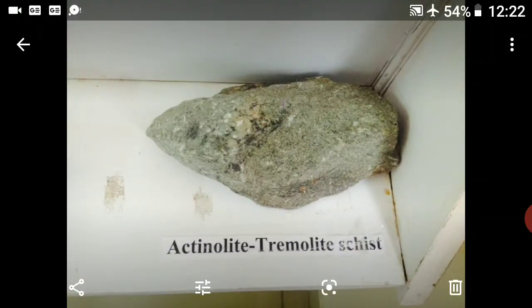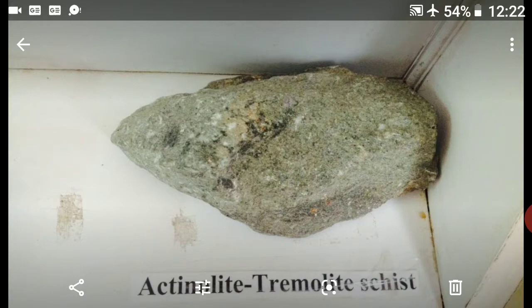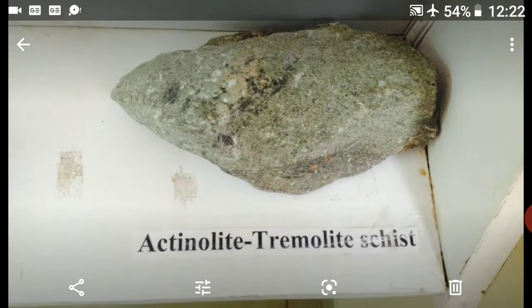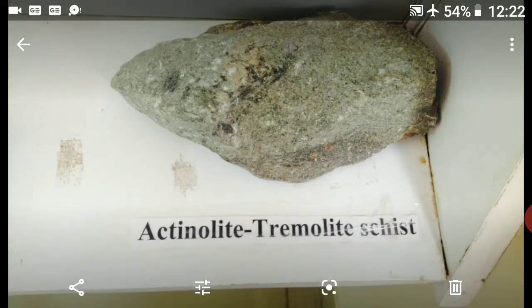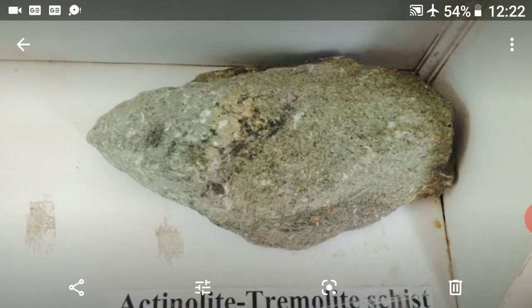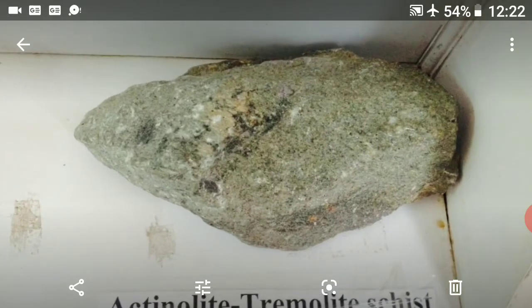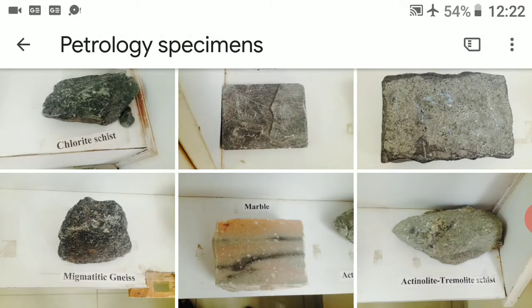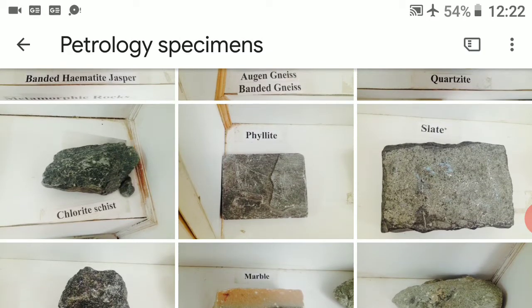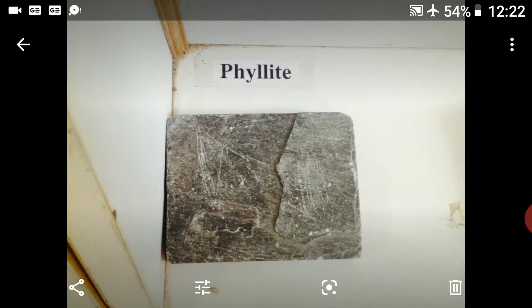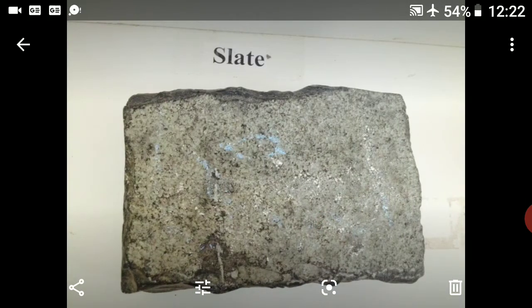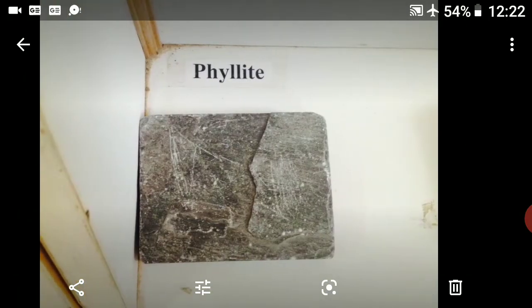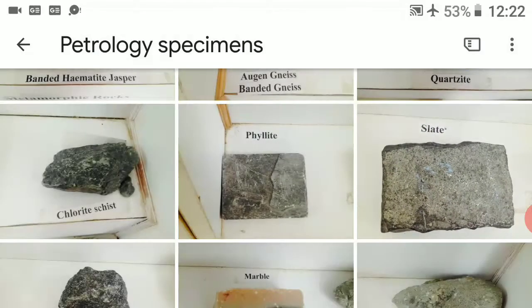Actinolite schist and tremolite schist, which you can see on the screen, are best examples of dynamo-thermal metamorphic rocks. Phyllite and slate are also best examples for dynamo-thermal metamorphic rocks.